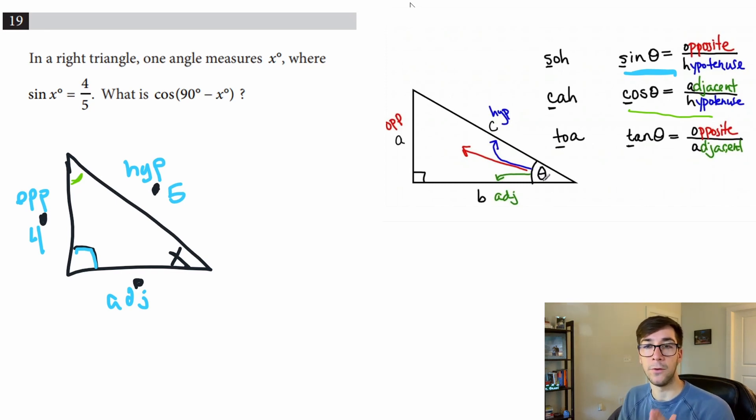For this angle here, and I'm writing in green for cosine, this one on the bottom is opposite, this one over here on the left is adjacent, and this one over here is still hypotenuse.